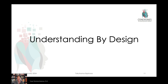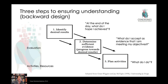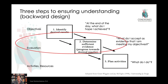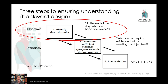Understanding by Design was developed by Jay McTie and Grant Wiggins, and it basically has three steps. First, decide your objectives — at the end of the day, what is it that you hope to achieve? Second, decide on evaluation structures — what evidence would you accept that you're moving towards your objectives? Third, decide what activities or resources you'll need. The key is having a clear objective, which makes it easy to decide evaluation criteria and necessary activities.